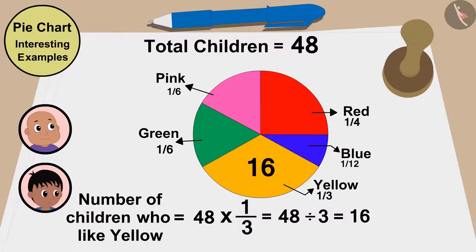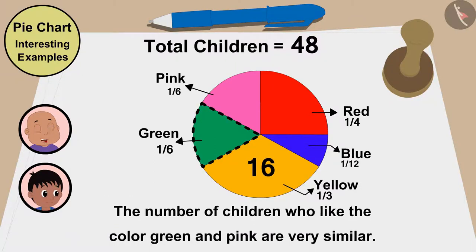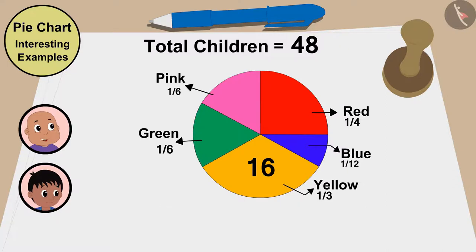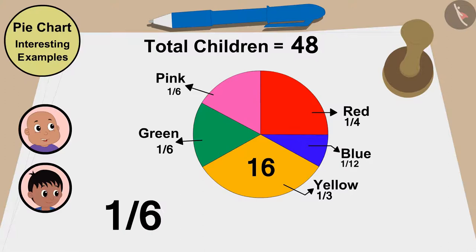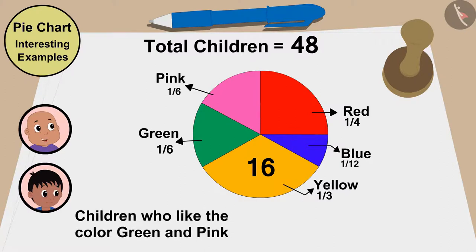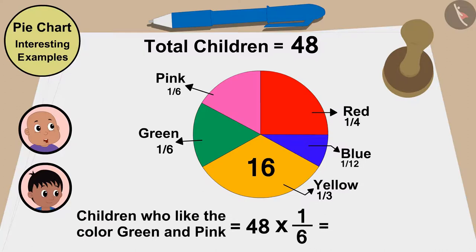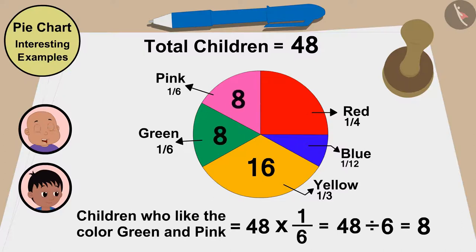This is so easy! And look — these parts show that the number of children who like green and pink are very similar, meaning the same number of kids liked both colors. This part is one sixth of the pie chart. So green and pink is 48 multiplied by one sixth, or 48 divided by 6, which equals 8. That means 8 children like green and 8 like pink.